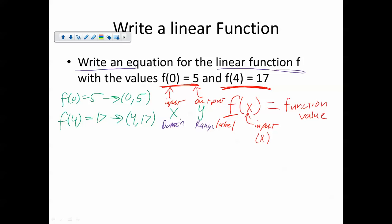When it asks us to write an equation for the linear function of f with these values, it's saying write an equation with these two points. Let's write an equation with those two points. This, at this point, is exactly like what we did in the previous example. My slope is y2 minus y1 over x2 minus x1, which in this case is 17 minus 5 over 4 minus 0, which is 12 over 4, which is 3. There's my slope.